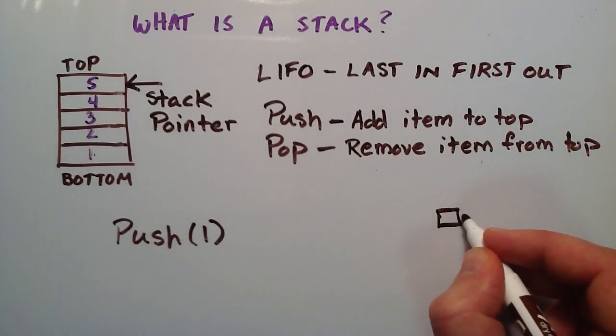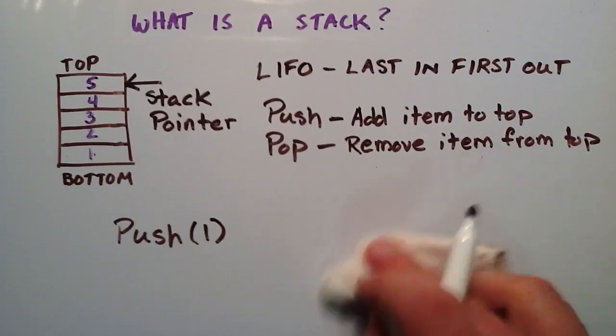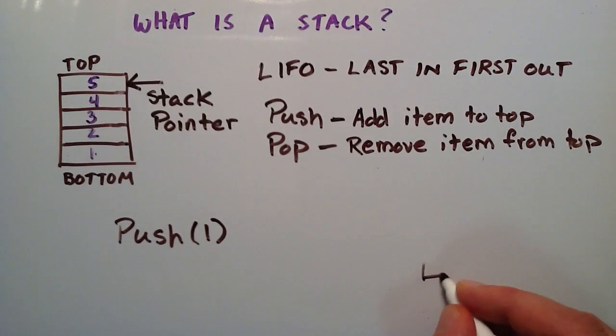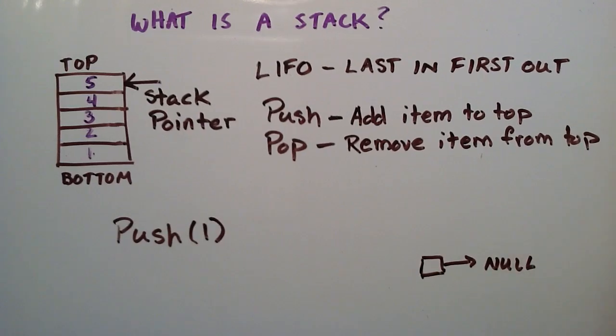So, we'll just say that this is our stack pointer and he's pointing to, let's just go ahead and do it down here. Let's just say our stack pointer is down here and he's just pointing to null right now to begin with. So, he's pointing to nothing and then I go ahead and implement this part of my code and it's going to push the number 1 on the top of the stack.